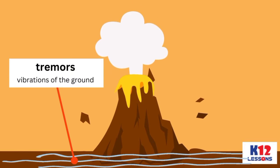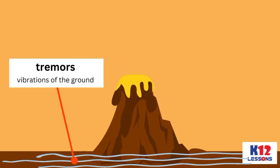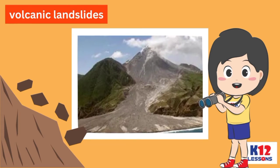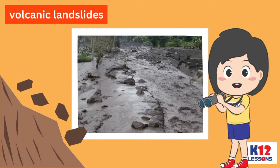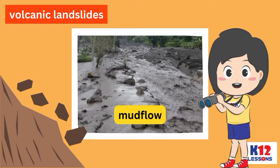Volcanic eruptions are associated with vibrations of the ground called tremors. These tremors disturb the balance in the soil, resulting in volcanic landslides. Volcanic landslides are large heaps of wet or dry rock and soil that slide or flow speedily down the slope of a volcano due to gravitational force during a volcanic activity. Volcanic landslides may contribute to mud flow that can travel as much as 200 km downstream.